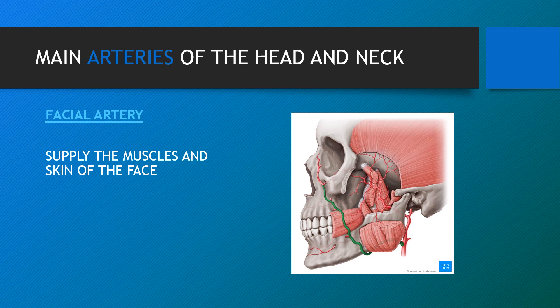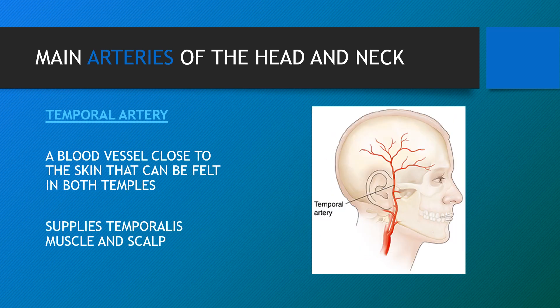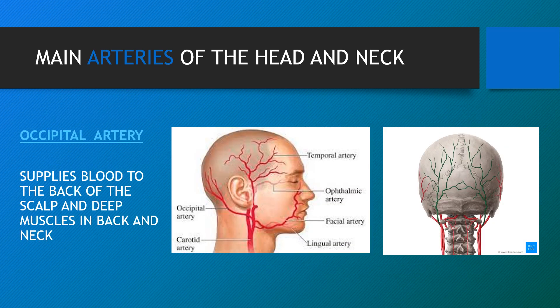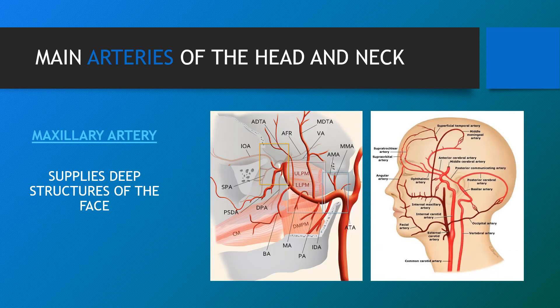The superficial temporal artery is a blood vessel close to the skin that can be felt in both temples, located either side of the forehead, and supplies the temporalis muscle and scalp. The lingual artery is a branch of the external carotid artery and is the principal artery supplying the tongue, sublingual gland and oral mucosa of the floor of the mouth. The occipital artery is a posterior branch of the external carotid artery located at the posterior portion of the neck and occipital region of the head, supplying blood to the back of the scalp and deep muscles of the neck. The maxillary artery is a continuation of the external carotid artery and distributes blood flow to the upper maxilla, lower mandible and deep structures of the face.